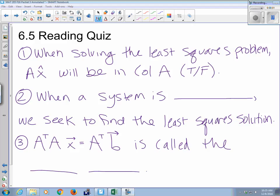When you're solving the least squares problem, AX hat will be in the column space of A. That's true, yes. AX, there is no X that will give you the B, so you're looking for something that's in the column space that's as close to B as you can get. So yeah, your AX hat will definitely be in the column space.